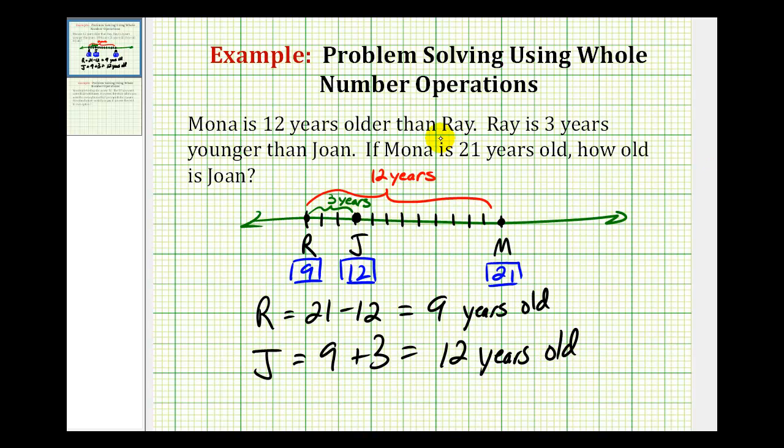Many of these types of problems are very difficult to answer unless you try to model them using a number line or something similar that represents the relationship among the different people.